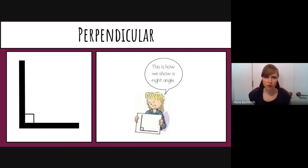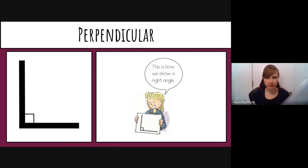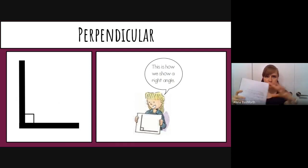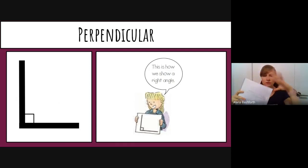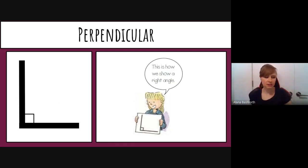To check whether an angle is a right angle, you can take a piece of paper and match it up onto the shape to see if those lines line up exactly with the edges of the paper.